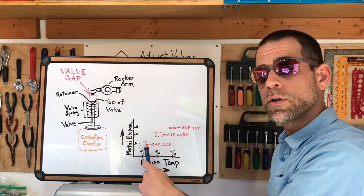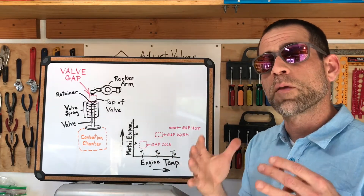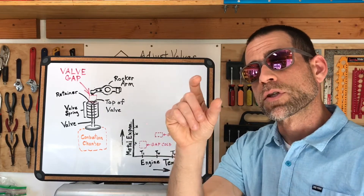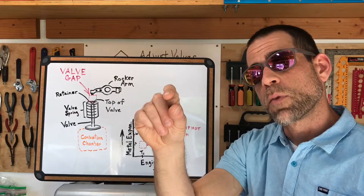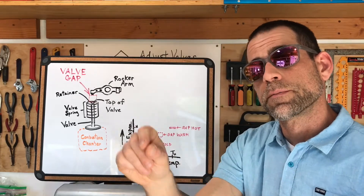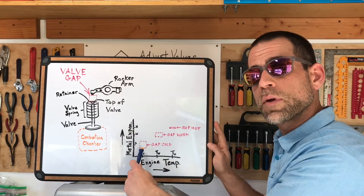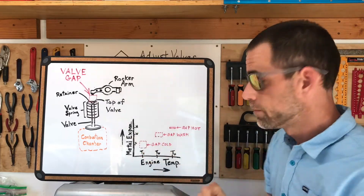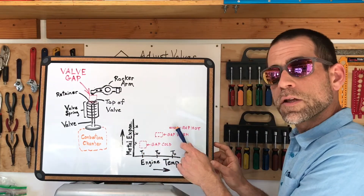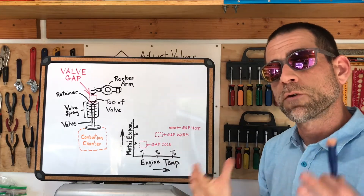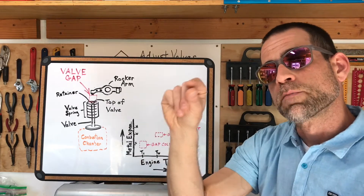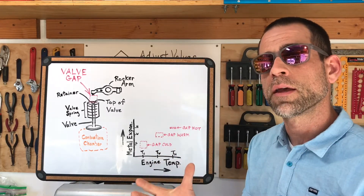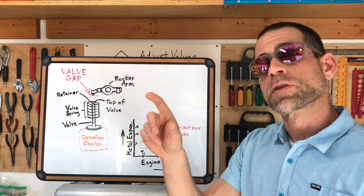That valve gap when the engine's cold, warm, and hot — as kinetic energy transfers into all the metal components, the valve train actually expands, and as it expands, that gap slowly shrinks to a smaller and smaller gap as the engine rises to full operating temperature. At the first point, we have the gap when the engine's cold — that's where you set your valves with the feeler gauge. As the engine warms up, that gap gets a little bit smaller. At the third point, the valve gap gets the smallest, when the engine's at full operating temperature, and the rocker arm is just barely touching the valve stem top. That's what drives the need to set the valve gap when the engine's cold — you're anticipating that the engine's going to heat up, all those components are going to expand, and that valve gap is going to shrink right up.